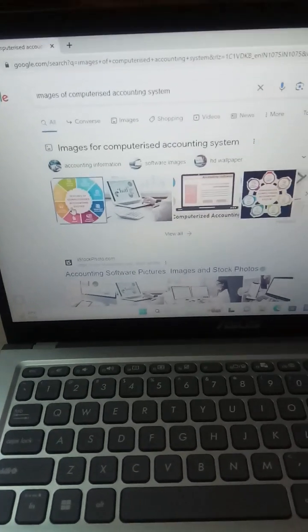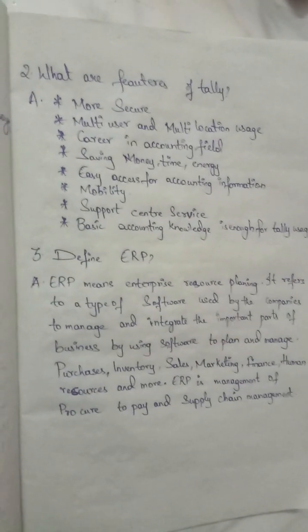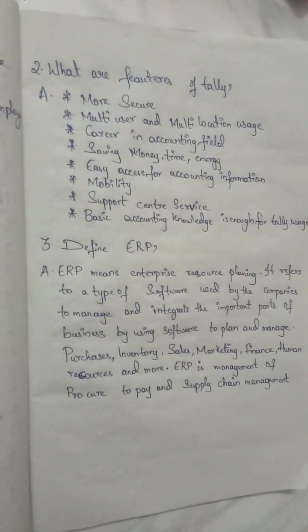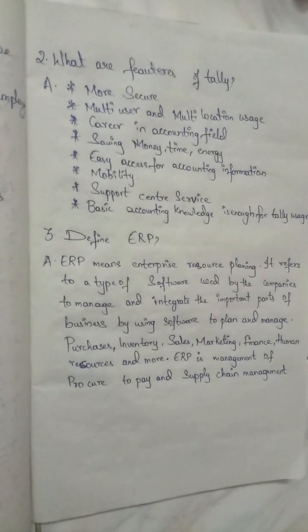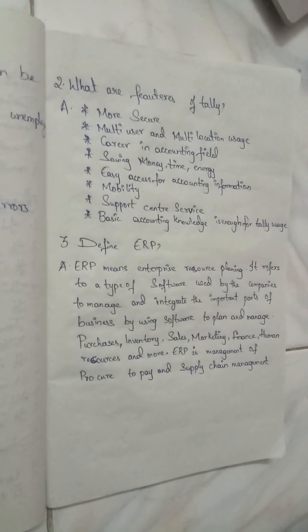ERP is nothing but Enterprise Resource Planning. It refers to a type of software used by companies to manage and integrate the important parts of business — including purchases, inventory, sales, marketing, finance, human resources, and more. ERP is management of procure-to-pay and supply chain management.